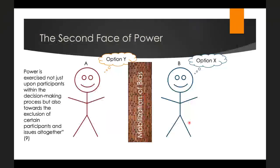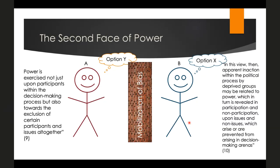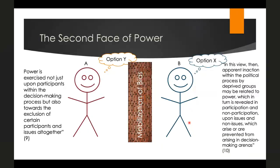In practical terms, if you exclude certain voices from the political process, their grievances and concerns are never brought forward. Gaventa summarizes this: apparent inaction by deprived groups may be related to power, which is revealed in non-participation and participation on issues and non-issues which arise or are prevented from arising in decision making arenas. This is why he calls it non-decisional power — A doesn't have to force B to do anything; A just keeps these interests out so there's no decision that has to be made.